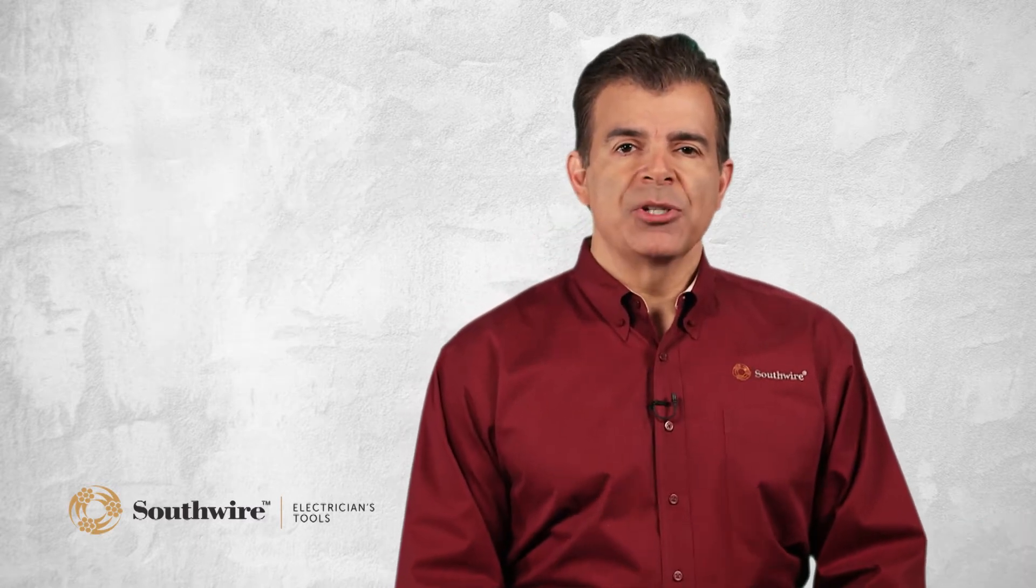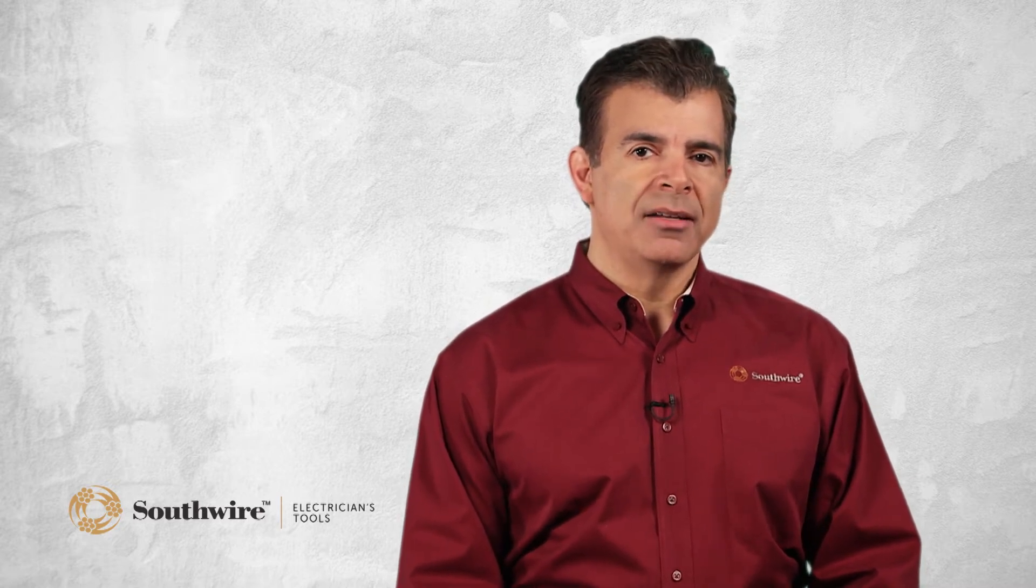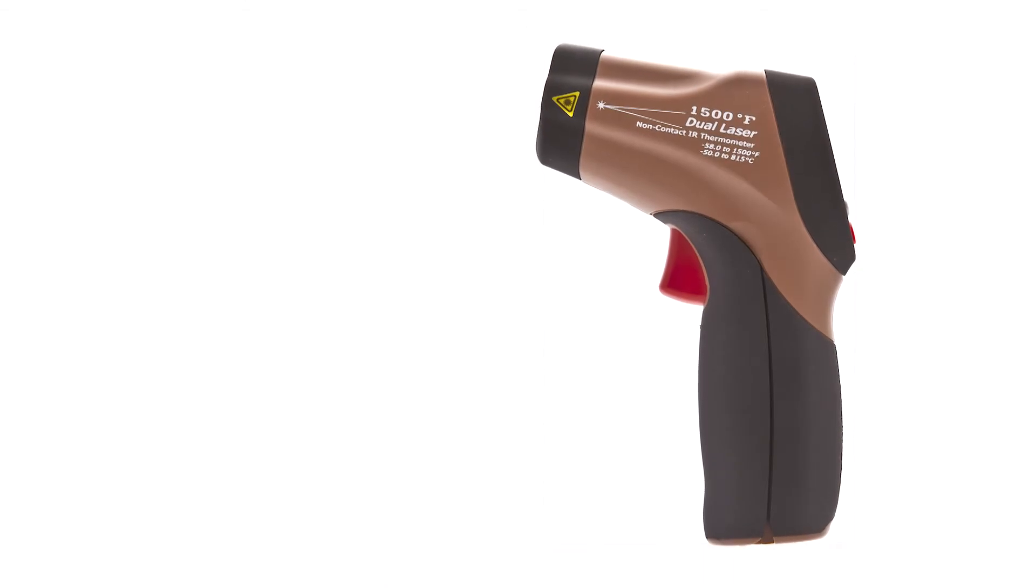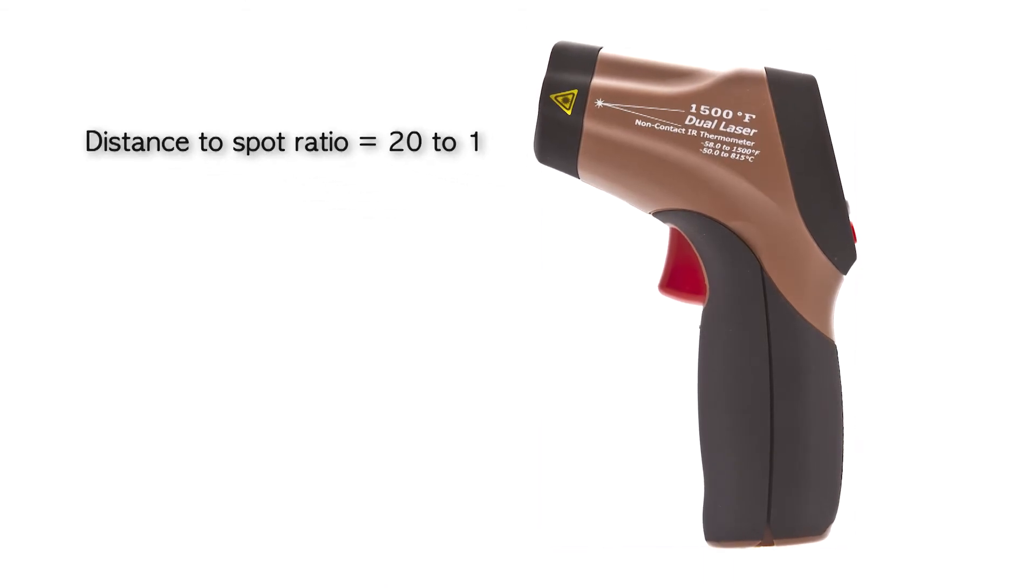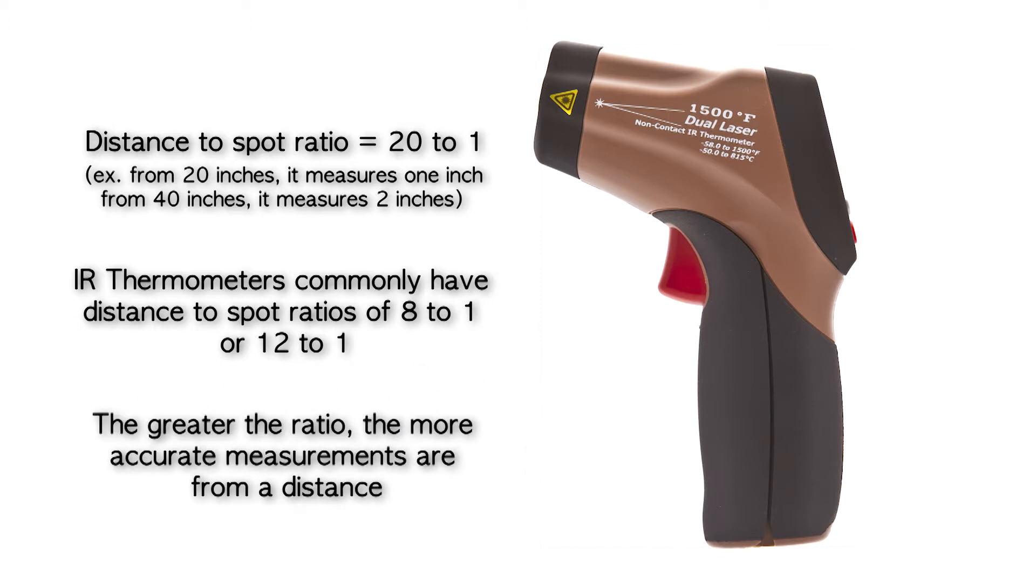Distance to spot ratio is a measure of resolution. It determines how far away a measurement can be made. For example, the top of the line Southwire 31040S has a distance to spot ratio of 20 to 1. So from 20 inches, it measures 1 inch. From 40 inches, 2 inches, and so on. IR thermometers commonly have distance to spot ratios of 8 to 1 or 12 to 1. The greater the ratio, the more accurate measurements are from a distance.